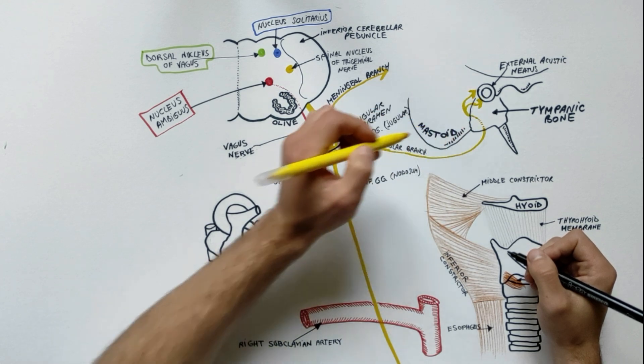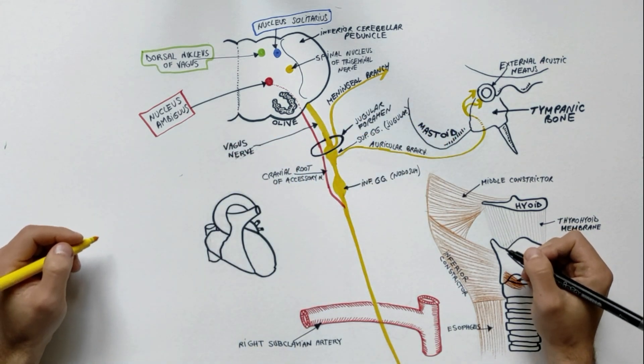It emerges through the tympanomastoid fissure just behind the external auditory meatus to supply the skin on the back of the meatus and adjoining part of the auricle, the floor of the meatus and the tympanic membrane.